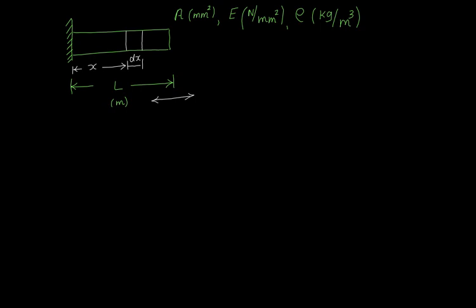It oscillates to and fro — that is longitudinal vibration. On the other hand, if the bar oscillates sideways, that is transverse vibration. In longitudinal vibration, all the points are moving parallel to the x-axis.